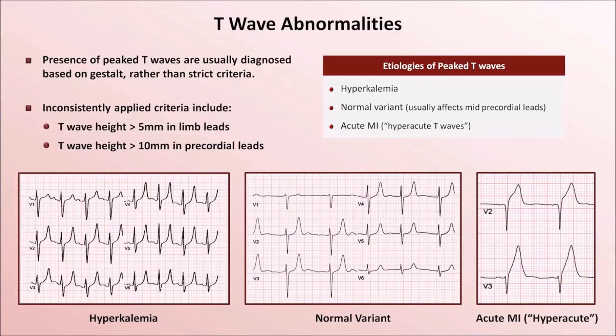Occasionally clinicians try to distinguish the etiologies of peaked T waves based on specific morphologic characteristics. The hyperacute T waves generally have a broader base and can for the most part be distinguished from those of hyperkalemia. However, the T waves of hyperkalemia and the normal variant can be too similar to distinguish these etiologies on the basis of just the EKG.